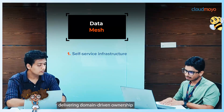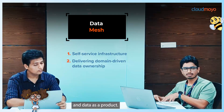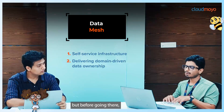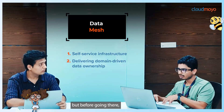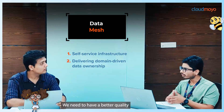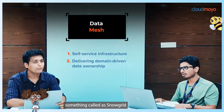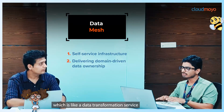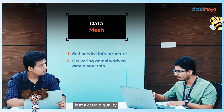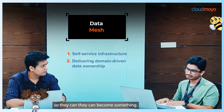The second principle is delivering domain-driven ownership and data as a product. We've been hearing this concept a lot — data as a product — but before going there, we need to have data in a certain shape, format, and quality. Snowflake provides something called Snowgrid, which is like a data transformation service. With Snowgrid, we can ensure data is at a certain quality and can be distributed across departments.